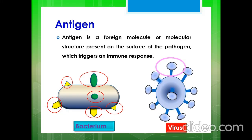Antigen is a foreign molecule or molecular structure present on the surface of the pathogen which triggers an immune response. Pathogen means disease-causing microorganisms like bacteria or virus. I have tried to show you a general structure of bacteria and a coronavirus-like structure for virus. Sometimes the whole molecule of a bacterium or virion acts as antigen. I have given red and pink circles to represent various molecular structures present on the surface of pathogens — these act as antigens. Among all the structural proteins of coronavirus, spike protein is the main antigenic component which is responsible for the host immune response.